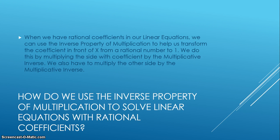We do this by multiplying the side with the coefficient by the multiplicative inverse. We also have to multiply the other side by the multiplicative inverse, and this will get x by itself and give us the value for x.